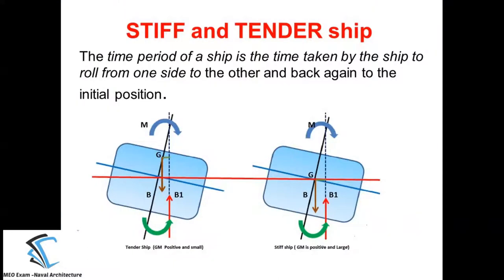In the earlier classes we have discussed about the stability of the ship. We have seen that if the GM is positive, the ship will come back to its original position — that type of ship we call a stable ship. But how fast the ship is coming back to its original position, that is the point of study.